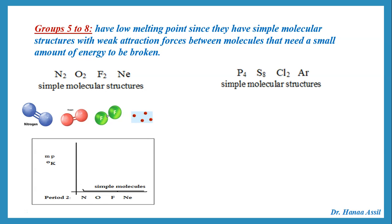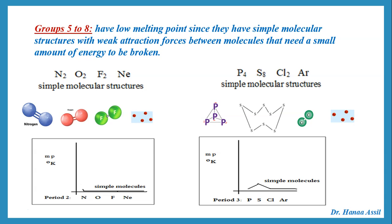In the next period we have phosphorus, sulfur, chlorine, and argon. Again, all of these have simple molecular structures. But notice that the phosphorus molecule is made up of four atoms, and the sulfur molecule is made up of eight atoms, then chlorine is diatomic. So there is a slight rise in melting point from phosphorus to sulfur, but all of them are simple molecular structures with weak attraction forces between the molecules, so they all have low melting points.